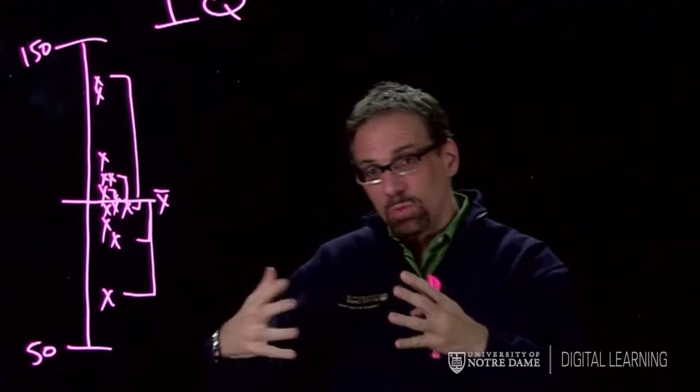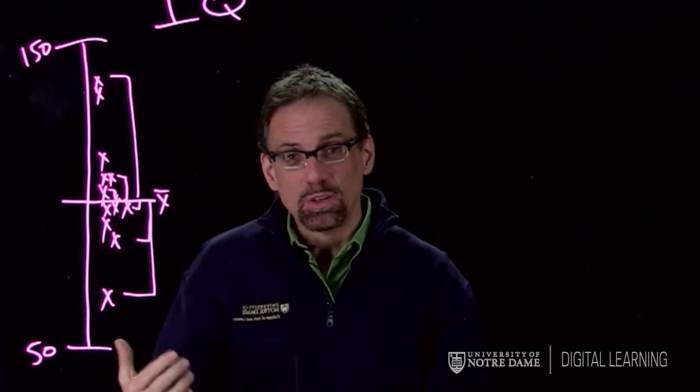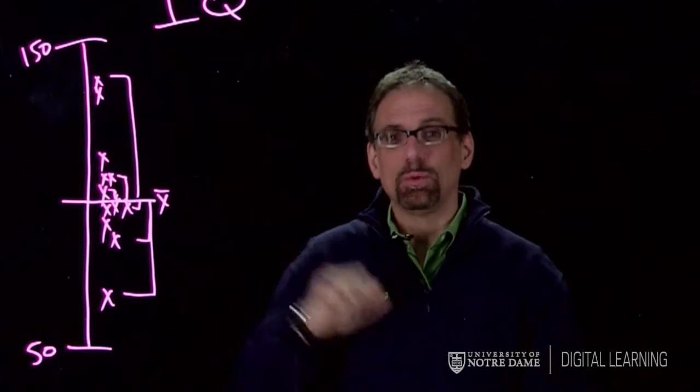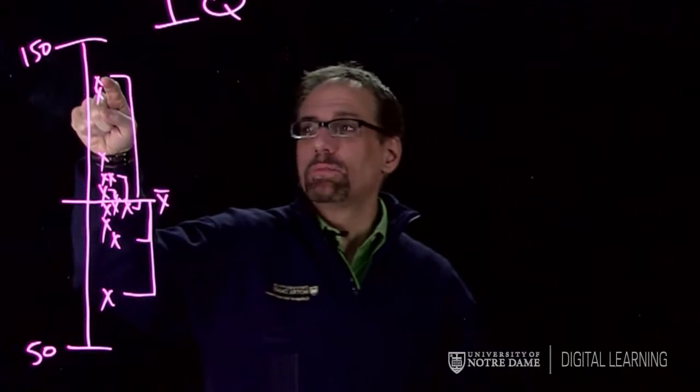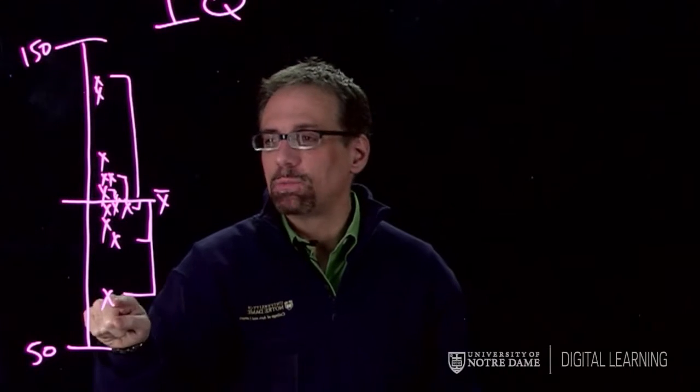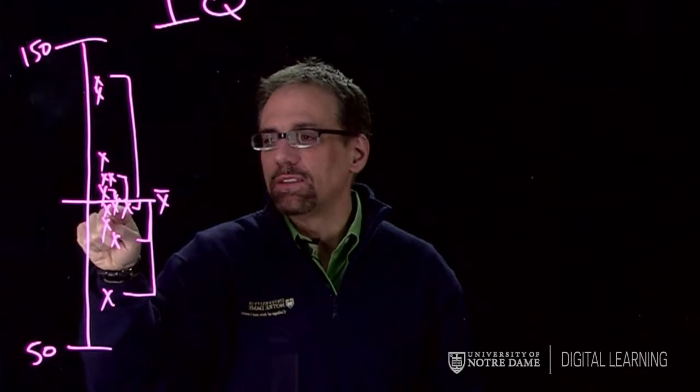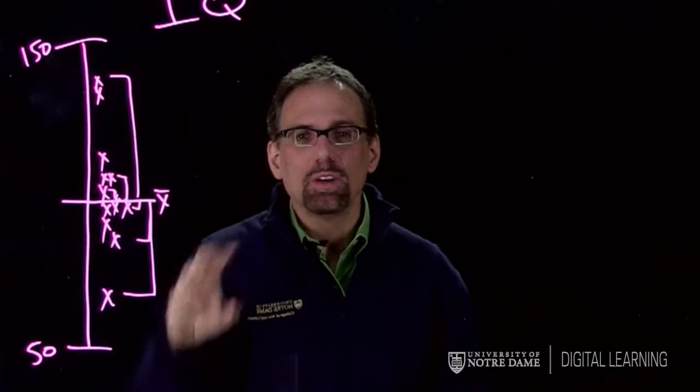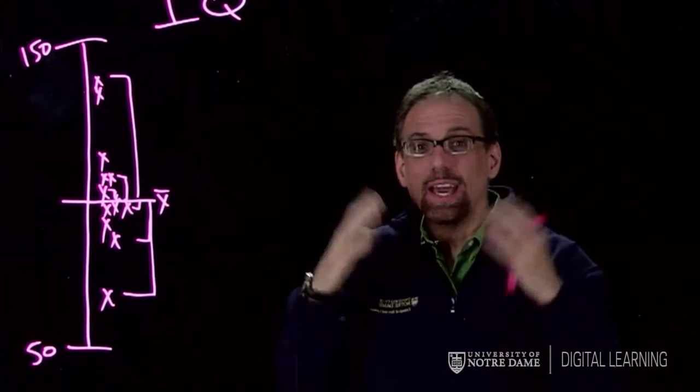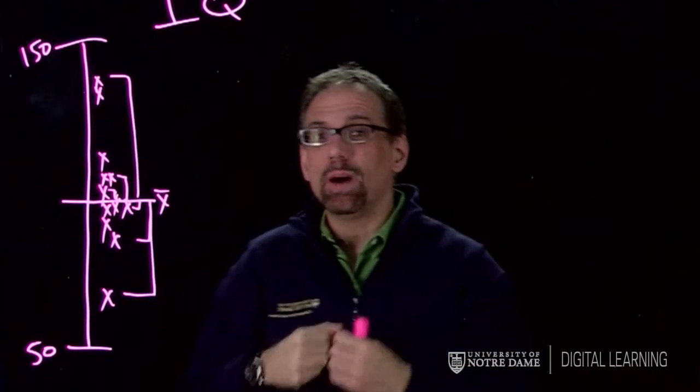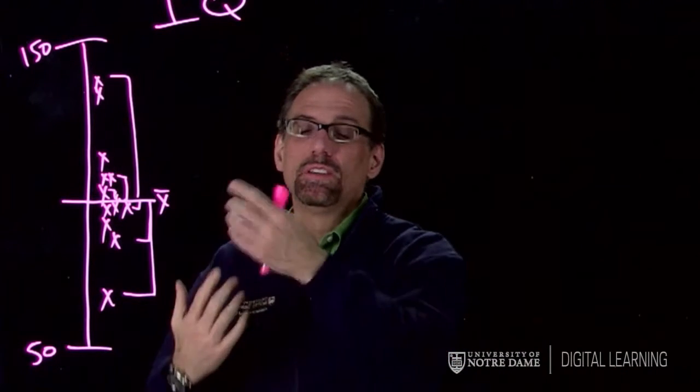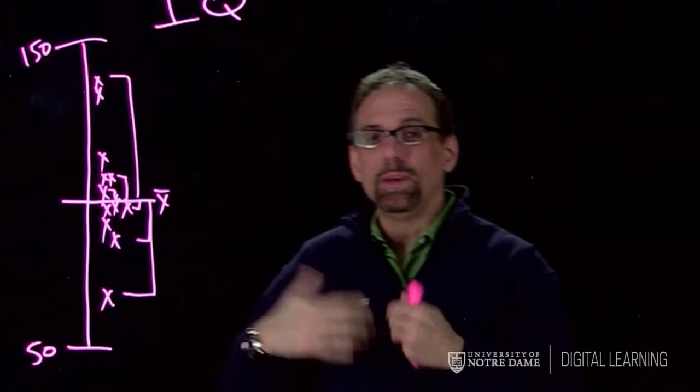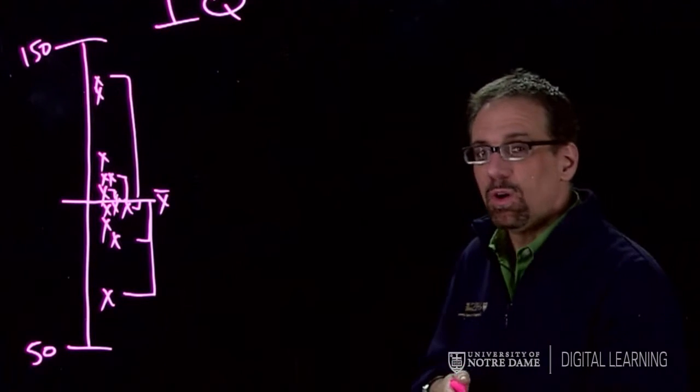And then, once we do that, we want to try to figure out what's responsible for that variance. Why is this person so high and this person so low? Why is this person so close and this person not? And so on. We want to see what's behind that, and we might guess some different things that might be producing the differences in IQ. So that would be what we're trying to do with ANOVA.